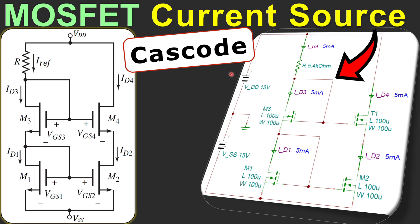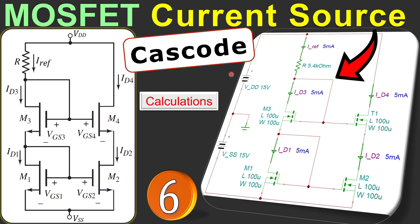Welcome to a new video about MOSFET current source design. This is our example number 6, where we discuss the cascode configuration. We'll see step by step in our calculations how we can calculate the required values for this design and also verify it in SPICE simulations.